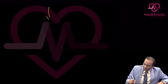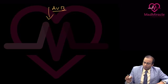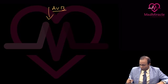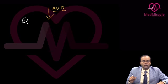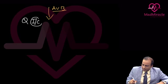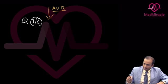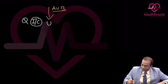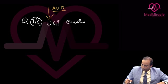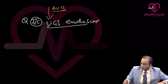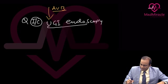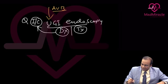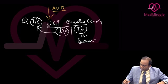After resuscitation, the investigation of choice in acute variceal bleed is upper GI endoscopy, because it is both diagnostic and therapeutic. Diagnostically it identifies the variceal bleed; therapeutically, at the same time you can perform banding or injection sclerotherapy.